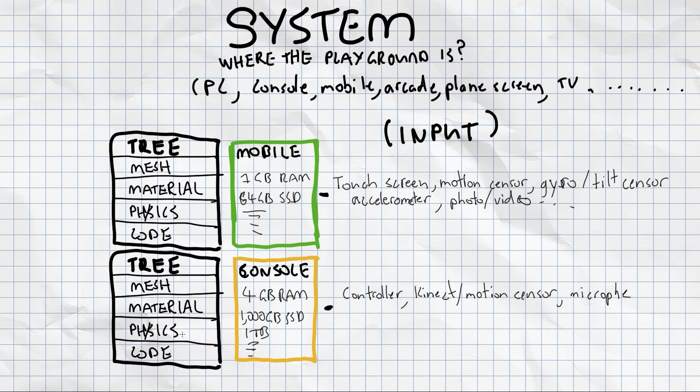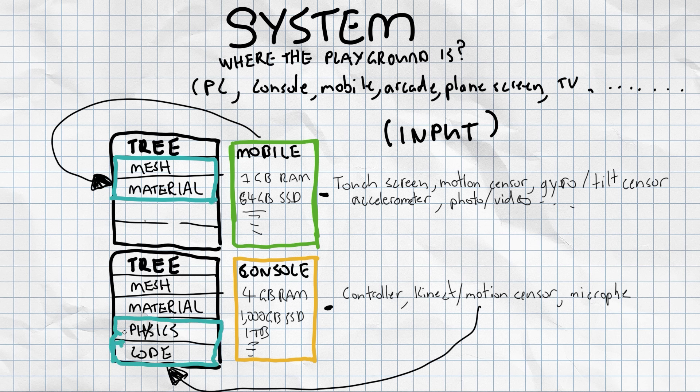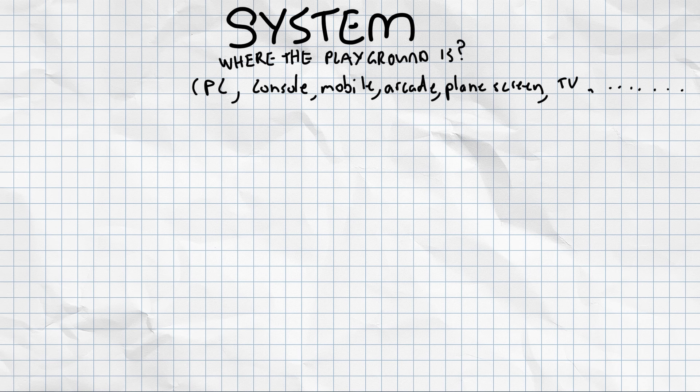So if the console has a lot more RAM and a bigger hard drive, it can load way bigger materials and textures and it can handle a lot more physics and things happening. So if we're making the same tree for a mobile game, maybe we'll have to scrap the physics and scrap the code and just make it a static object. And then we'll have to compress the mesh and compress the materials and make it a bit smaller file size. Where a console, we can change the physics and the code depending on how we're playing it.